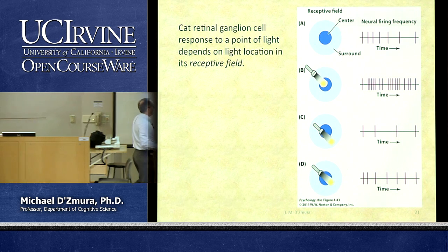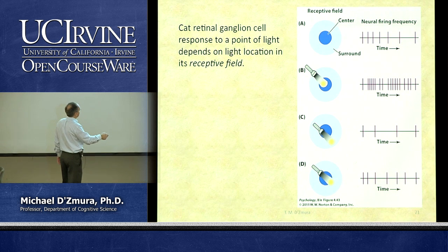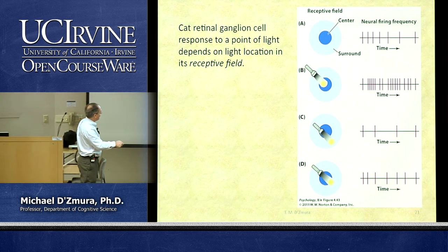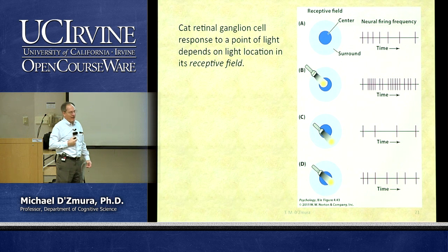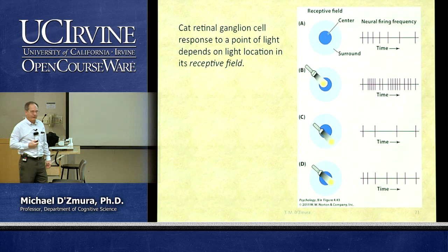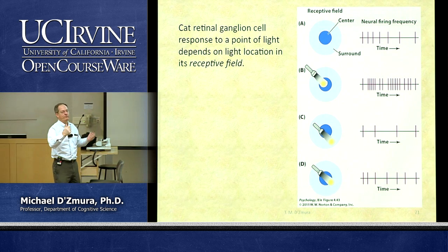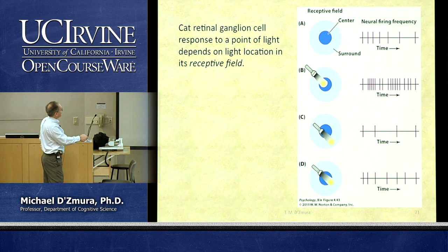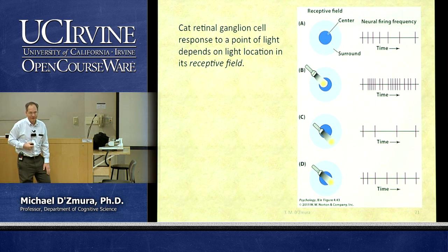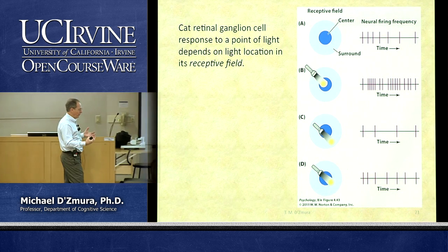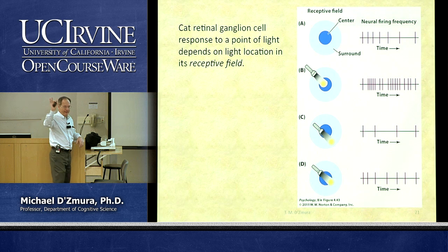A light positioned outside the receptive field has no effect — lights there lie outside that cell's receptive field. A receptive field is that area of the visual field where light stimulation can alter the rate of action potential firing. Shining light in the center excites the cell; shining light in the surround inhibits the cell; going outside the receptive field has no impact whatsoever.